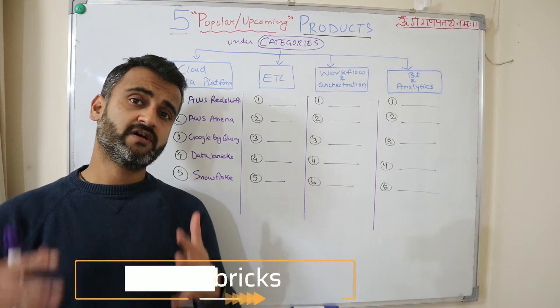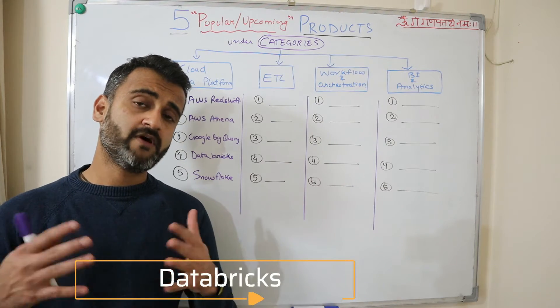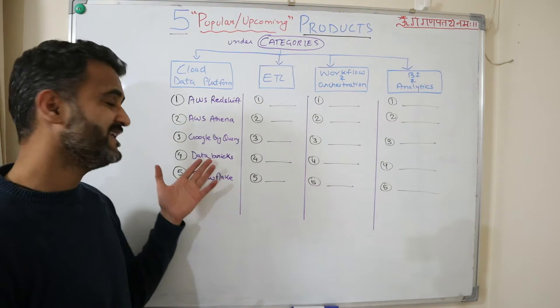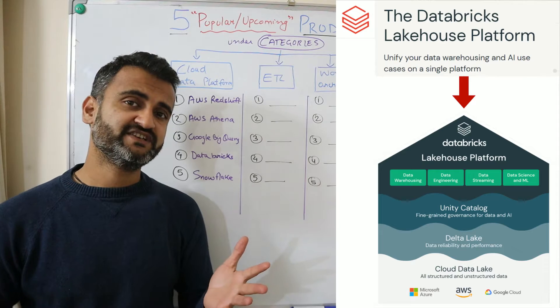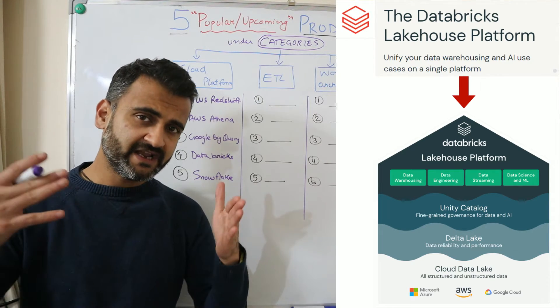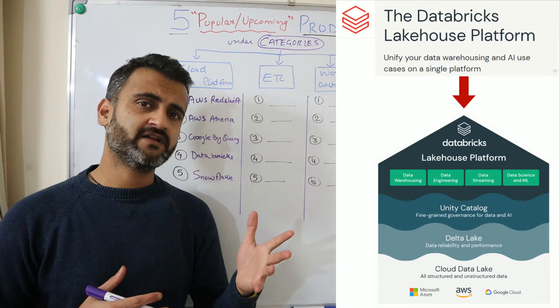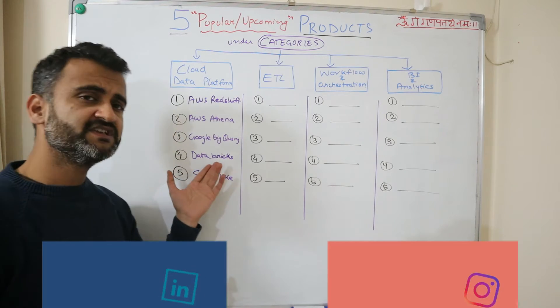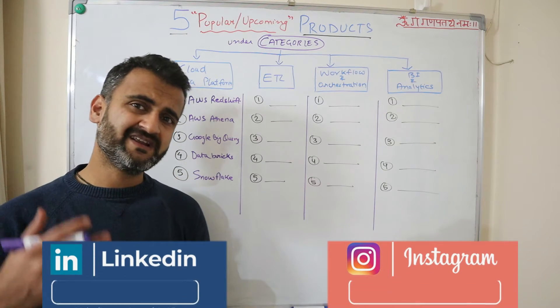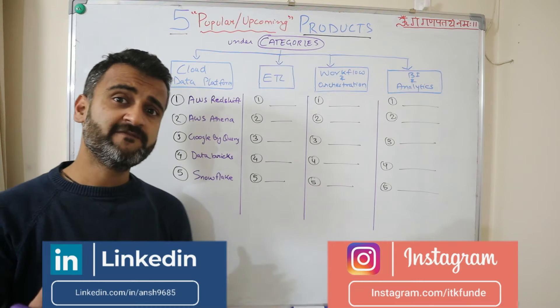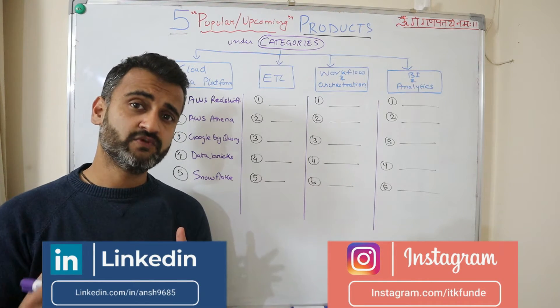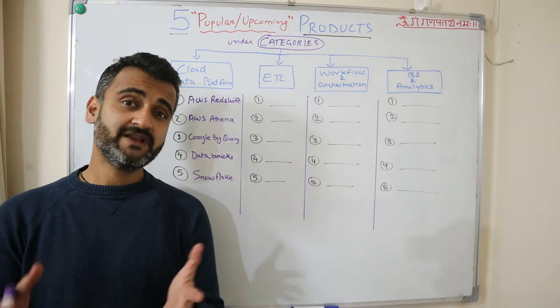Databricks is a product or a company which was founded by the founders of Apache Spark. Basically it is a layer on top of Apache Spark. They have customized this particular product so that it can integrate seamlessly with all the different cloud providers, and you can pretty much start developing your data pipelines, especially for your AI, ML, and data science workloads on Databricks. It's a very popular product.